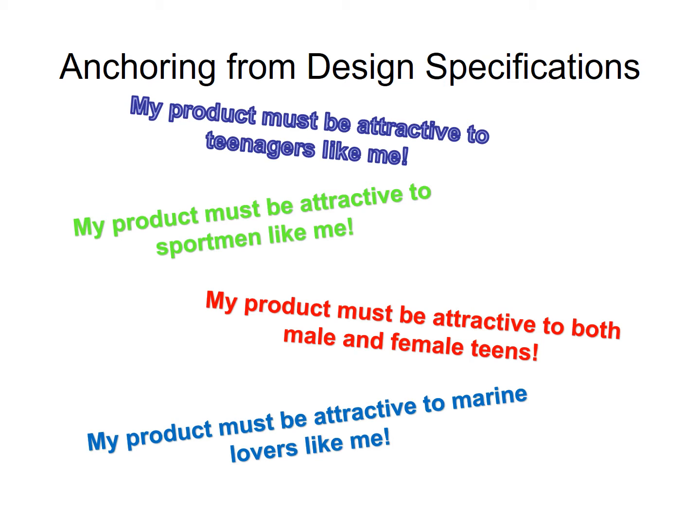The design specification will look something like: my product must be attractive to teenagers like me. So basically you are looking into things that will attract teenagers — shape, colors, and even characters that may attract teenagers at your time. Or a design specification like: my product must be attractive to sportsmen — so it will be very related to what kind of sports you are particularly interested in.